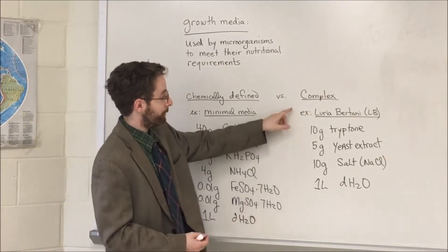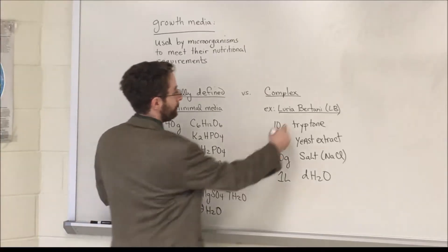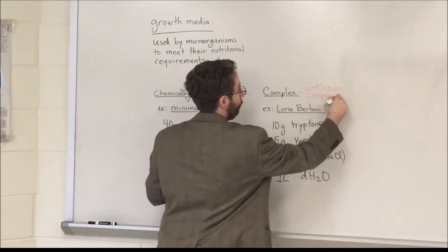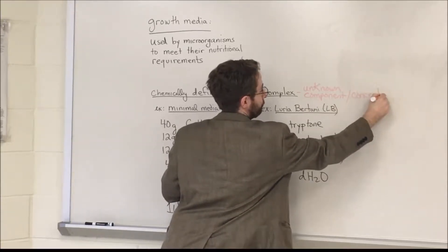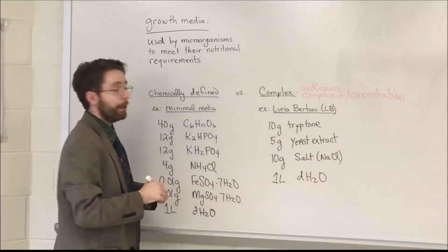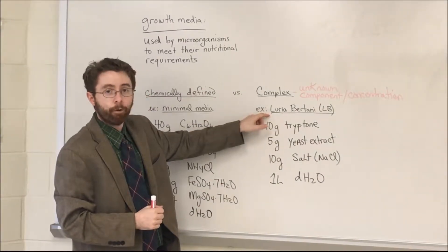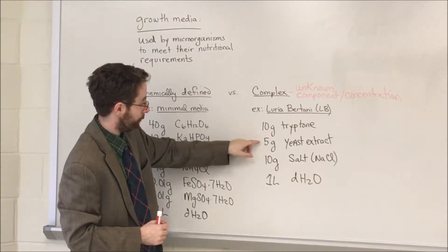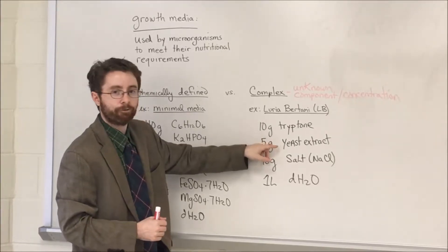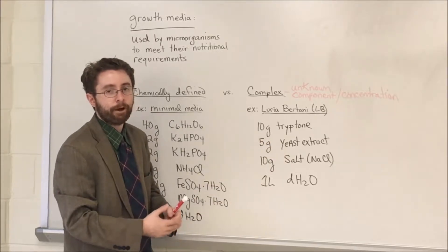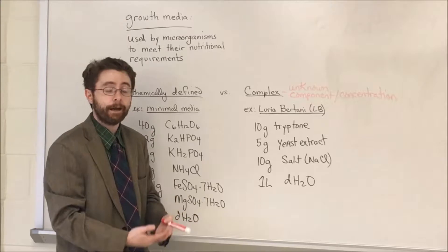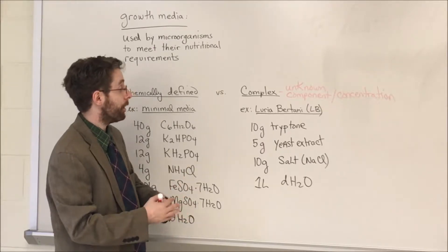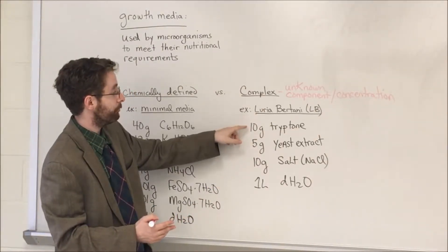The other type of media we have is complex media. In complex media, we have an unknown component or concentration. An example of complex media is Luria-Bertani or LB. If I look at the recipe for LB, we notice that one of the ingredients is five grams of yeast extract. That yeast extract is not well defined, and depending upon what yeast you use and when that extract was made, it can differ between preparations. So for that reason, we define LB media to be complex.